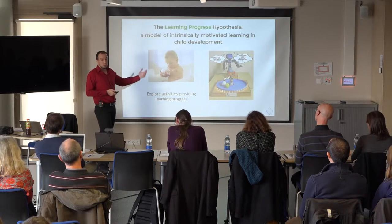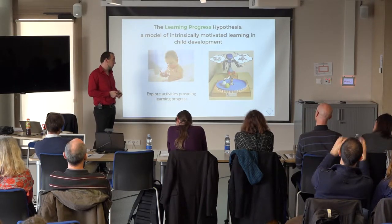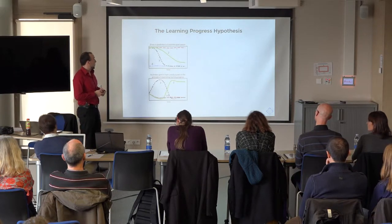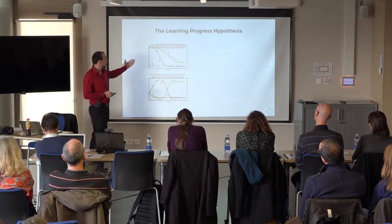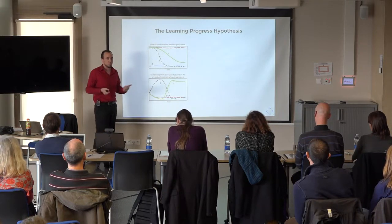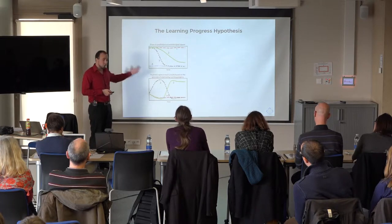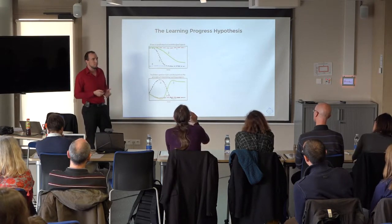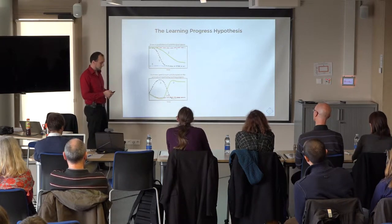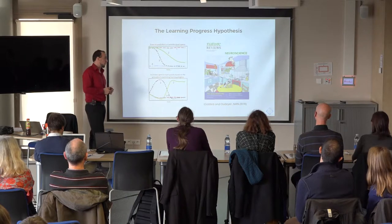Basically, kids explore activities that provide them learning progress — information about the world that permits them to expand their knowledge. This can also be applied to robots: how do we make robots explore and learn to use their arms or legs? The concept of the hypothesis is that if you have different activities — very difficult, really easy, and medium difficulty — the ones presenting medium and challenging perspectives will be chosen by kids. They choose activities that present a bit of change and provide learning progress. These works were published in neuroscience and psychology reviews.